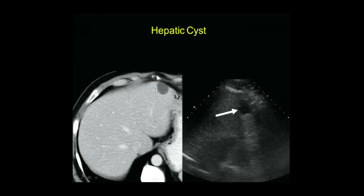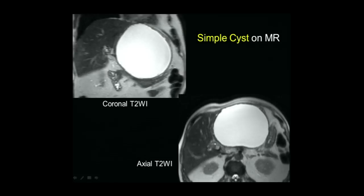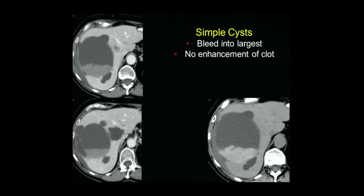Here's a hepatic cyst on CT and ultrasound — there's a little septum, which is okay. Note through transmission, lack of internal echoes. Here's a simple cyst on coronal and axial MR: very bright uniformly on T2-weighted images, very dark on T1. Then we have a lesion that on the contrast-enhanced scan might appear to have mural nodularity suggesting a cystic neoplasm. The non-enhanced scan clearly shows this is clotted blood, measuring about 65 Hounsfield units. ROI before and after contrast shows no enhancement whatsoever — this is spontaneous bleeding into a large cyst.